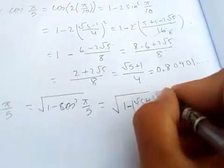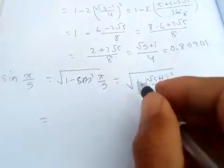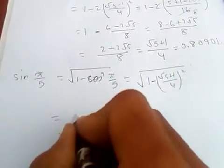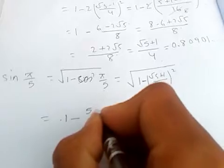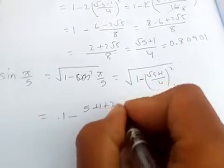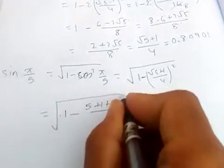4 squared, and this and this and this can be canceled. And 1 minus, if you simplify this, (5 + 1 + 2√5)/16, this square root.